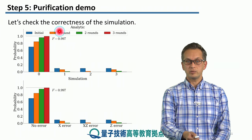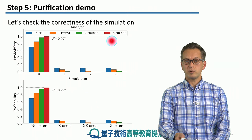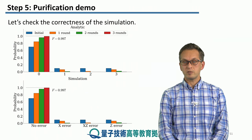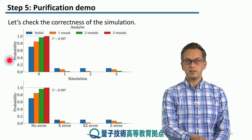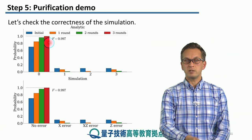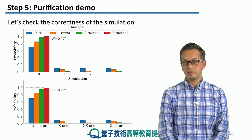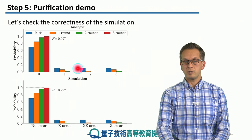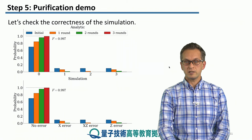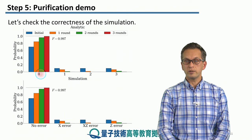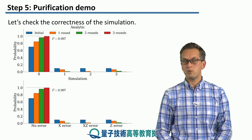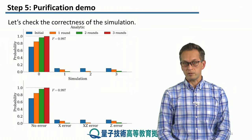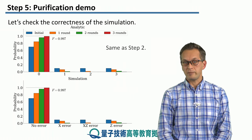That's here at the top. Before, we went up to 10 rounds, but for the purposes of this step, we're only going up to 3 rounds. We see that if we start with a fidelity of 0.7, over the 3 rounds it gets boosted to 0.997, while all the errors get suppressed. Here we have X, XZ, and Z errors. And these are the results coming from our simulation where all the sources of errors have been turned off — no photon loss, no memory decoherence, no gate errors, and no measurement errors. It looks like they are giving us exactly the same answer.